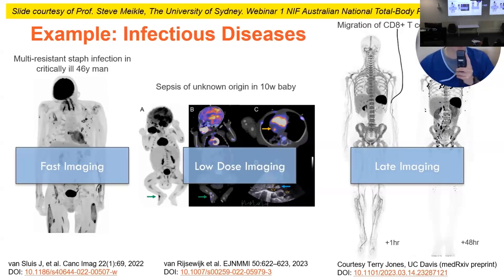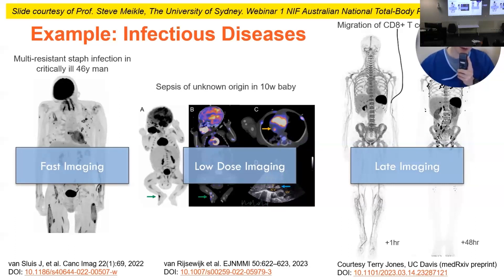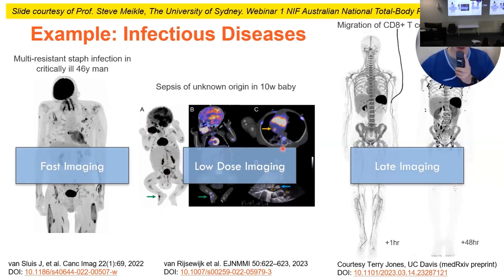This slide was provided by Steve Meikle as part of one of his talks on the NIF website in the Australian National Total Body PET webinar series. He provided it to highlight that other groups have also described the use of total body PET for imaging with low-dose, very quick scans in paediatric patients — interestingly, one having endocarditis, similar to the patient I presented earlier.